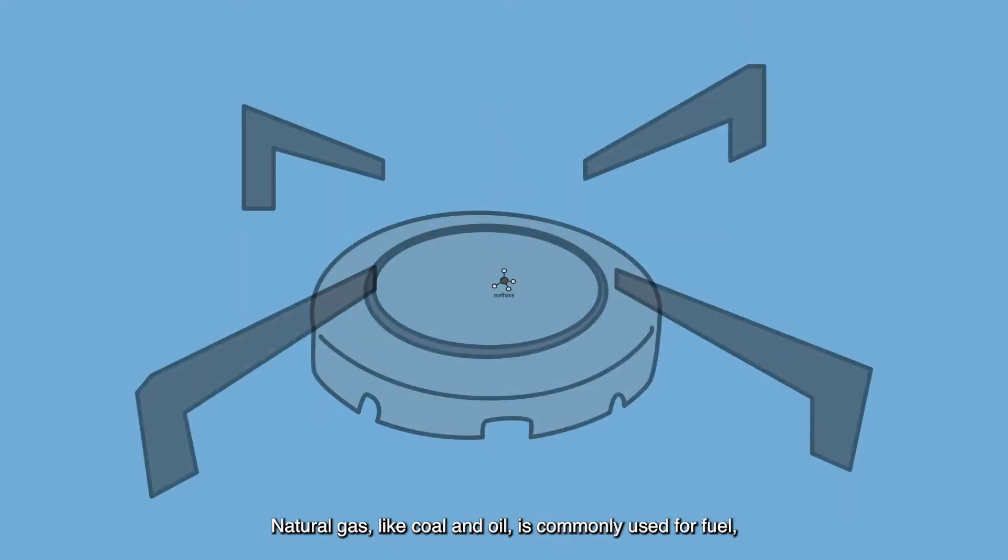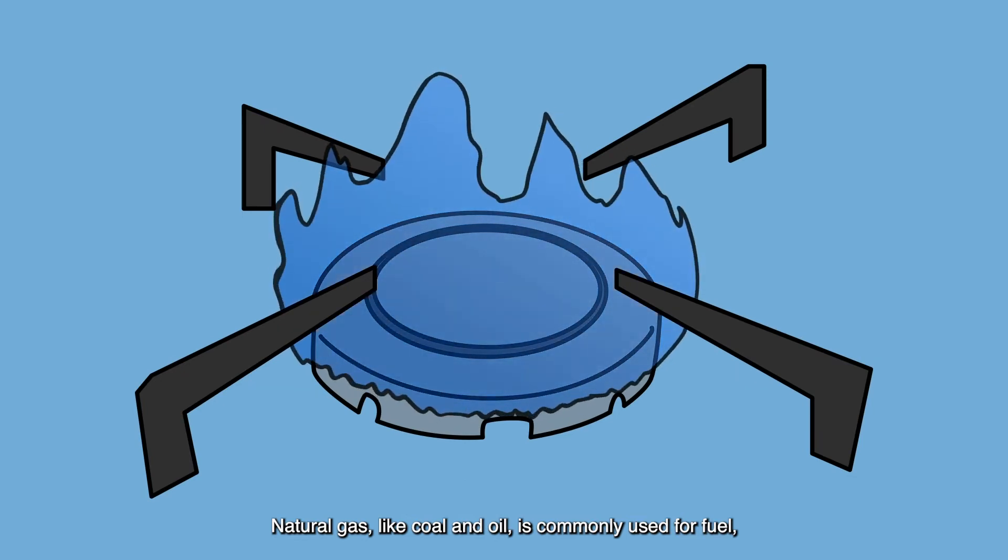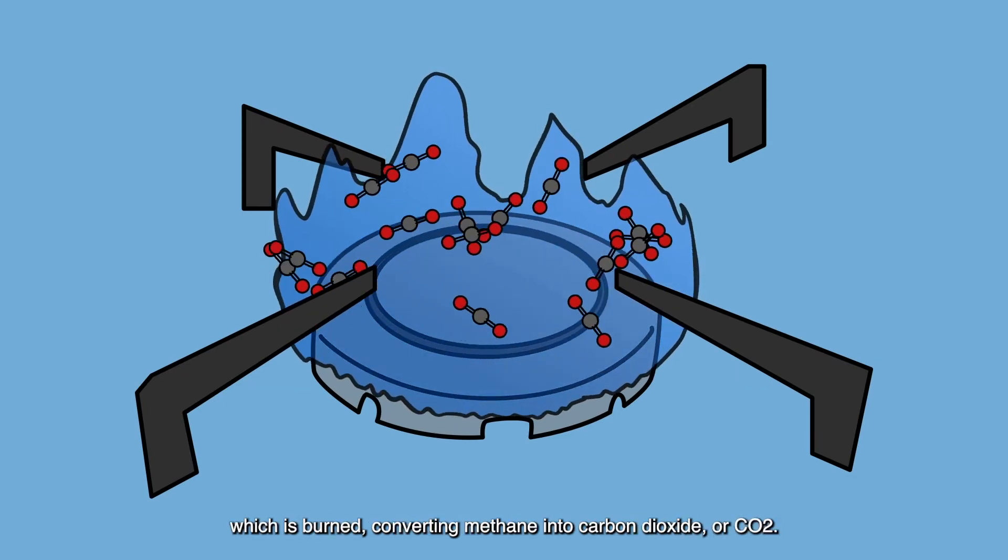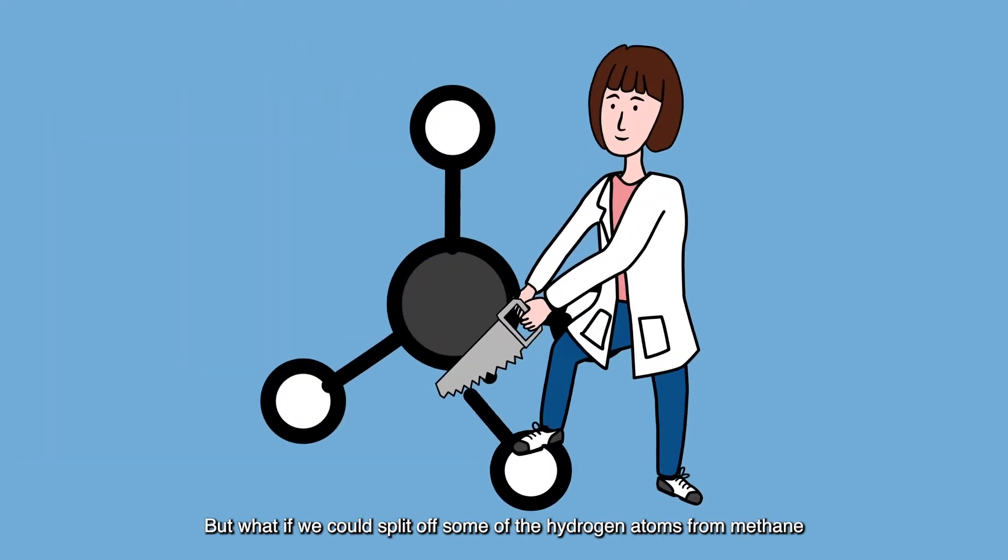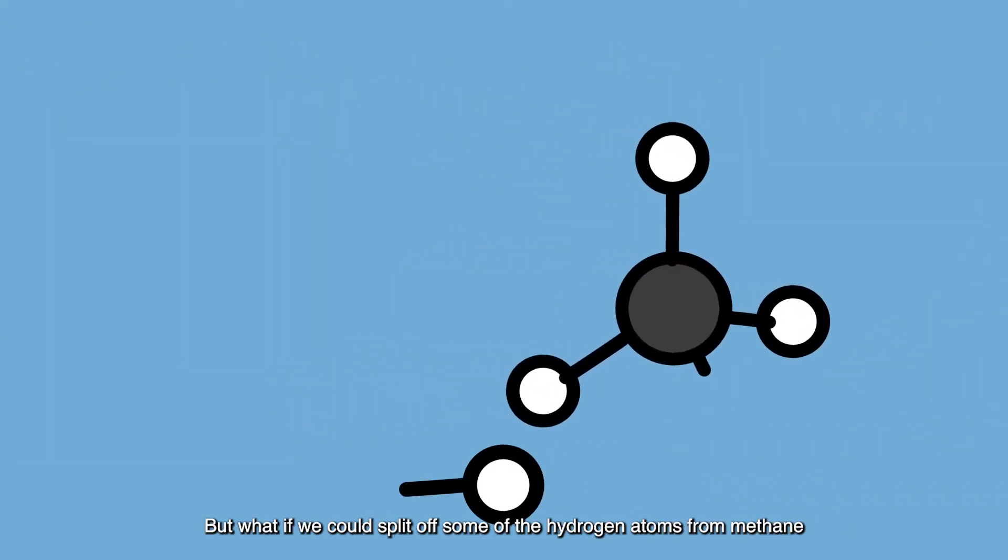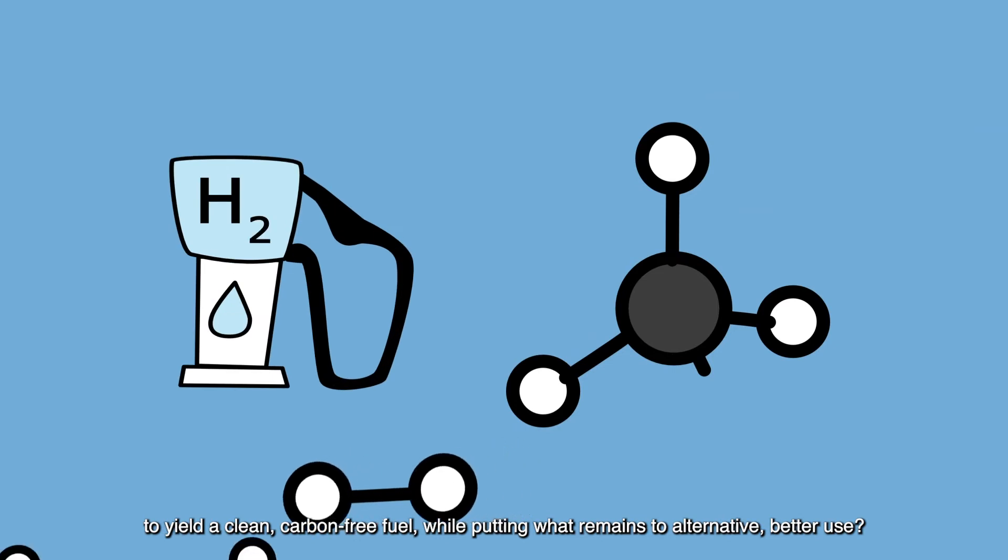Natural gas, like coal and oil, is commonly used for fuel, which is burned, converting methane into carbon dioxide, or CO2. But what if we could split off some of the hydrogen atoms from methane to yield a clean, carbon-free fuel, while putting what remains to alternative better use?